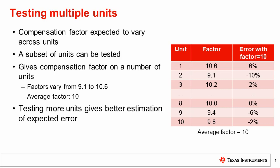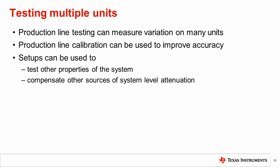There is additional uncertainty due to only testing 10 units. If more units were tested, a better model of the distribution could be created. Testing in the production line can be used to measure the variation and error on a large number of units and check that it is acceptable. If the variation is higher than the acceptable error for the use case, then production line calibration can be used to correct the error and improve the accuracy on each unit.